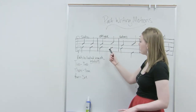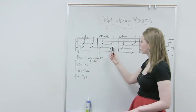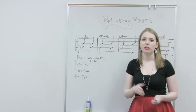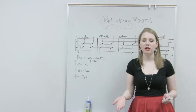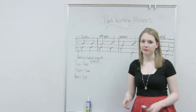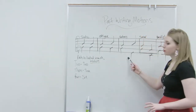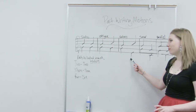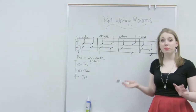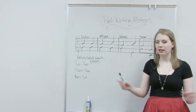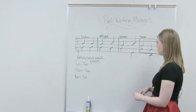In this example of oblique motion, we have a G and B, and then in the next chord we have a G and C, so one part stays constant.